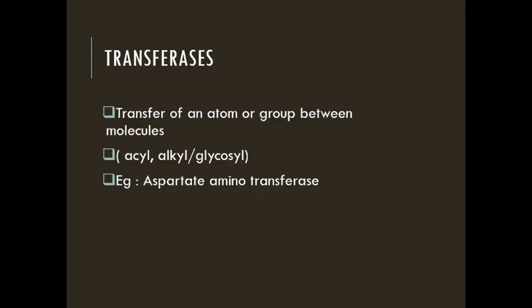The second class is transferases, which catalyze the transfer of an atom or group of atoms — for example, acyl, alkyl, or glycosyl groups — between two molecules. Transferases do not involve the transfer of oxygen, hydrogen, or electrons, which are catalyzed by oxidoreductases. All other transfer reactions involving acyl, alkyl, or glycosyl groups are catalyzed by transferases.